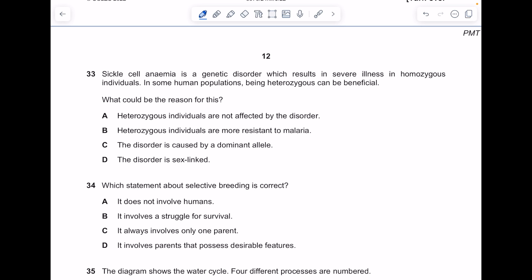Sickle cell anemia is a genetic disorder which results in severe illness in homozygous individuals. In some human populations being heterozygous can be beneficial. Remember these people won't get malaria because the plasmodium protozoa won't infect heterozygous individuals. So heterozygous individuals are more resistant to malaria is the answer.